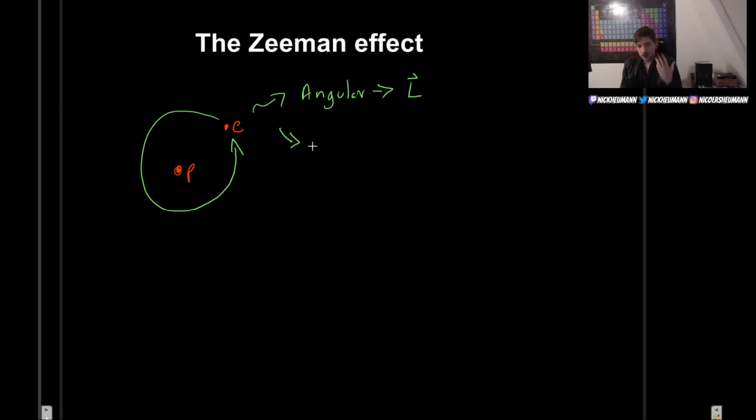But we also have the intrinsic angular momentum, or just spin S. So we have two parts that we need to consider.